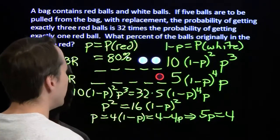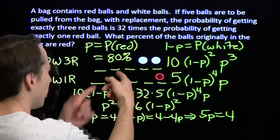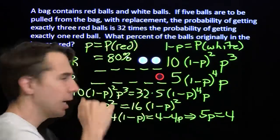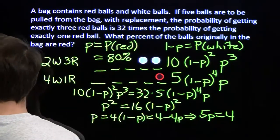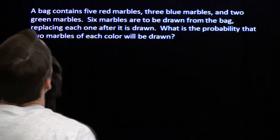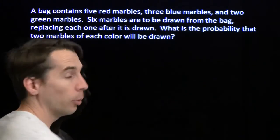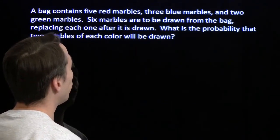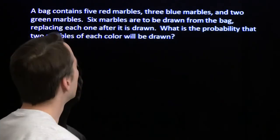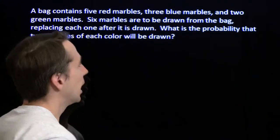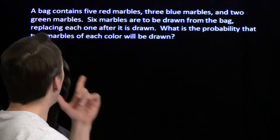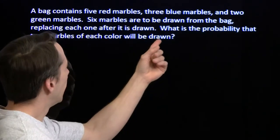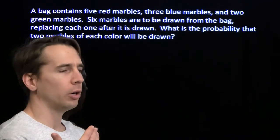We got that. There is a faster way to figure out those ten arrangements, but we need to move on. Now I've got another bag — this time with marbles instead of balls. We've got 10 marbles in 3 colors: 5 red, 3 blue, 2 green. We're going to pull 6 marbles out, putting each one back each time, just like before, and we want the probability of getting 2 of each color.